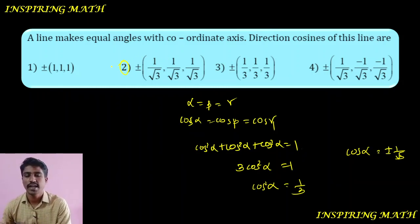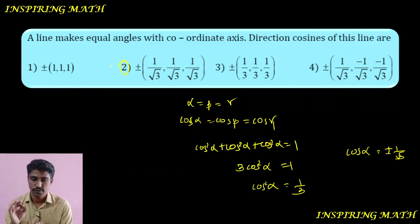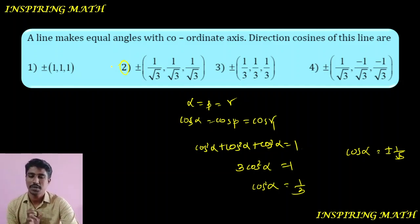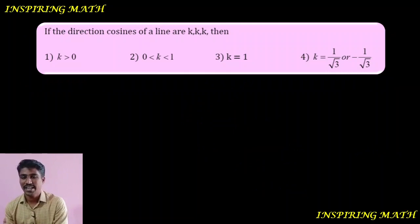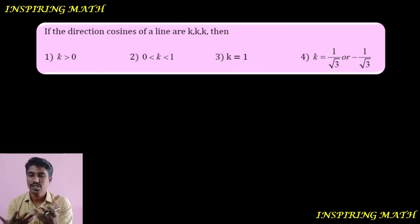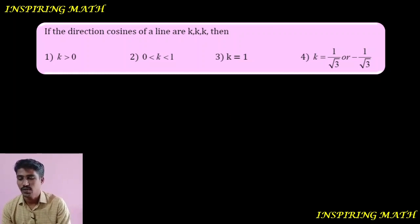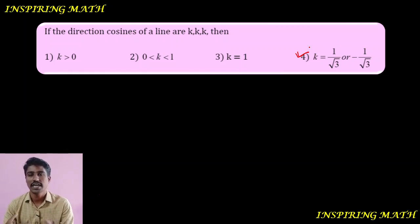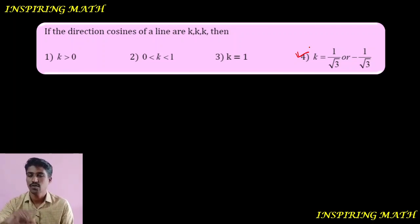A line makes equal angles with coordinate axes — direction cosines of the line are very important. If the direction cosines of a line are k, k, k — that is, all equal — then what is the value of k? Using l² + m² + n² = 1, we already derived cos α = ±1/√3, so the answer is k = ±1/√3. Concept correct.